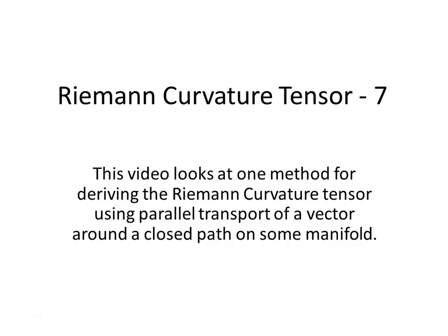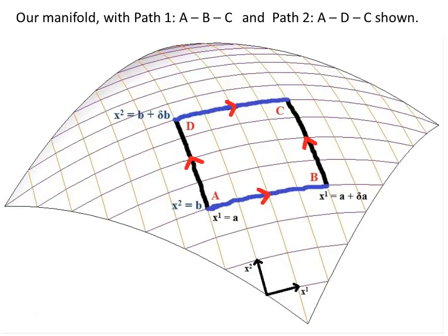In this video we're going to look at another method for deriving the Riemann curvature tensor using parallel transport of a vector around a closed path in some given manifold. We start with a vector at point A and parallel transport it from A to B to C, and then from A to D to C along these paths — the x1 and x2 directions. In a curved space there will be a change between the two parallel transports, but in flat space the net change would be zero.